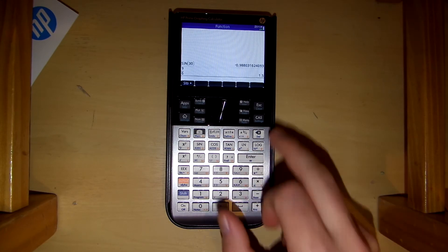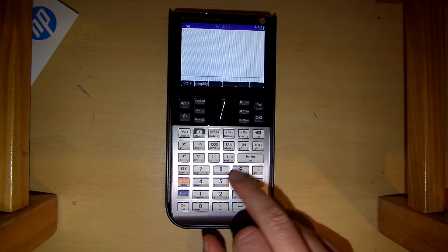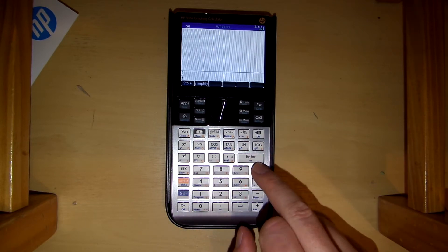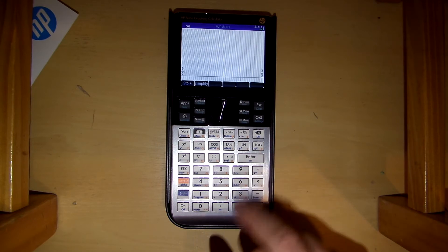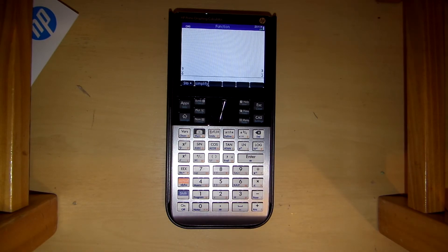But if I go here, 9 divided by 5. This is in CAS mode. 9 divided by, sorry, 9 divided by 6. Enter. And it's 3 on 2. So it does precise mode rather than decimal. Decimal mode.